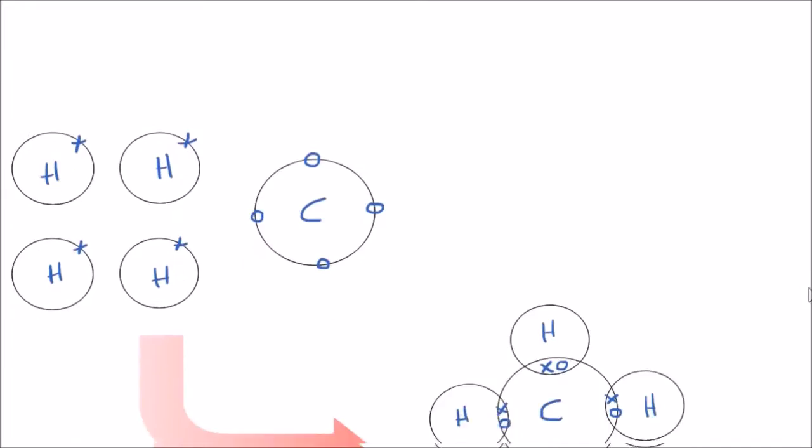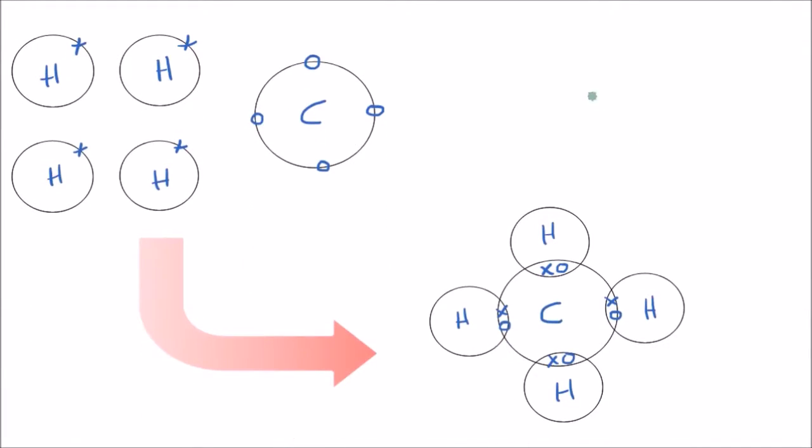The last example is methane, so methane is CH4. You have four hydrogen atoms, each with their single electron. They each need one electron to form a full outer shell, and then you have your carbon which has four electrons in its outer shell and it needs another four to complete that shell. So we form around the carbon four single covalent bonds. And the molecule drawn out, this structure diagram, would look like this.